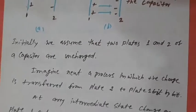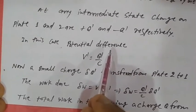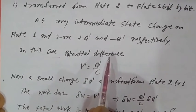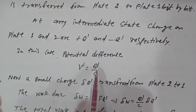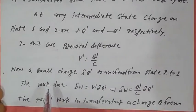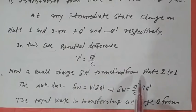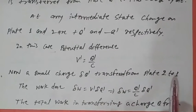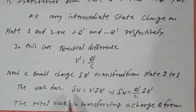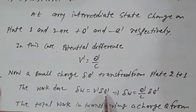In this condition, the potential difference between the two plates 1 and 2 is V' equal to Q' divided by C. Now a small charge delta Q' is transferred from plate 2 to plate 1. The work done is delta W equal to V' times delta Q'.